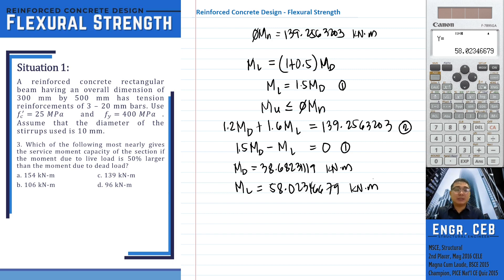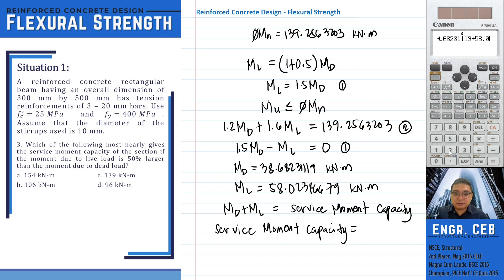For the service moment capacity, we just add M sub D and M sub L. This is now the service moment capacity, and that is equal to 38.68231119 plus 58.02346679, which equals 96.705779 kNm. And that is letter D.